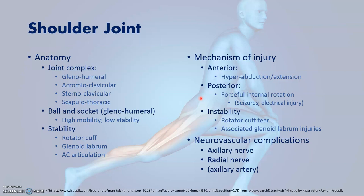The structures that improve stability around the joint include the rotator cuff muscles, the glenoid labrum, and the acromioclavicular articulation. The rotator cuff muscles include the supraspinatus, infraspinatus, subscapularis, and teres minor. In addition to the rotator cuff muscles, stability is further enhanced by the glenoid labrum, which is mostly cartilaginous and increases the depth of the glenoid fossa, thus increasing stability of the joint.